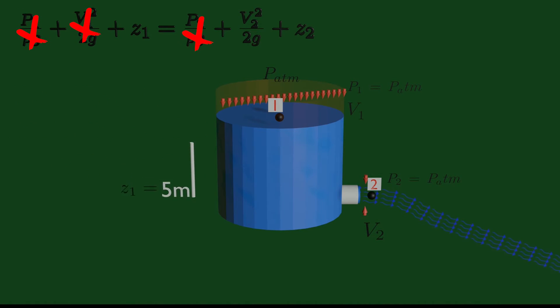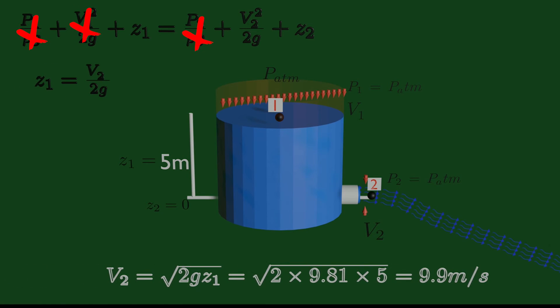Z1 is the datum height of 5 meters, and Z2 equals 0, as we take the reference level at the center of the outlet. Solving the equation, we will finally get the velocity of 9.9 meters per second.